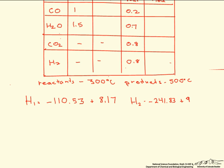And then using the same table, we look at what it takes to bring it to 300 degrees. Now, the other four enthalpies are products, so they are at 500 degrees.